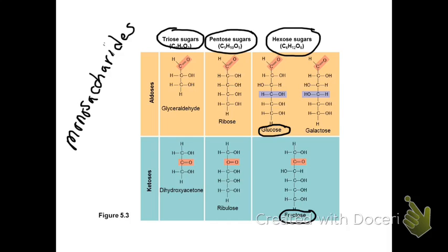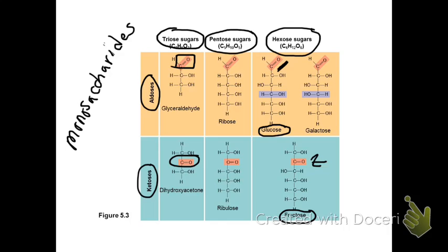We can also break down carbohydrates by their functional groups. Monosaccharides will either be aldoses, which means they have aldehyde groups, or they're ketoses, where they have ketone groups. Glucose has an aldehyde, whereas fructose is a ketone. So we would call fructose a ketose and glucose an aldose. The other functional group found in all monosaccharides are alcohols — they have these OH groups. So essentially, all sugars are alcohols.